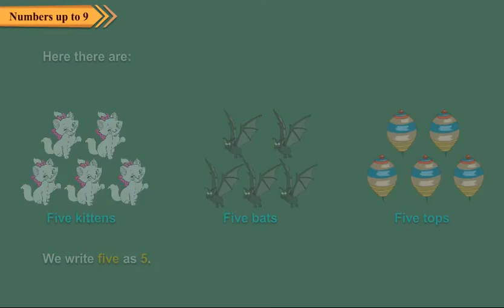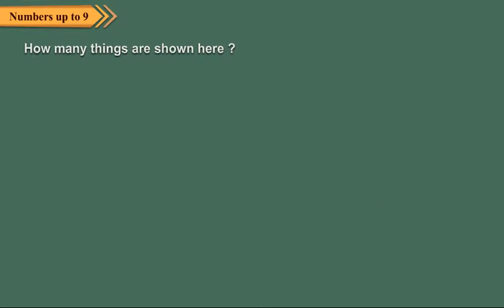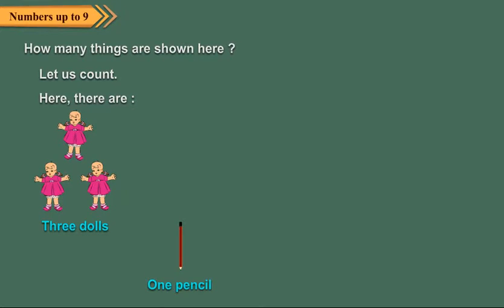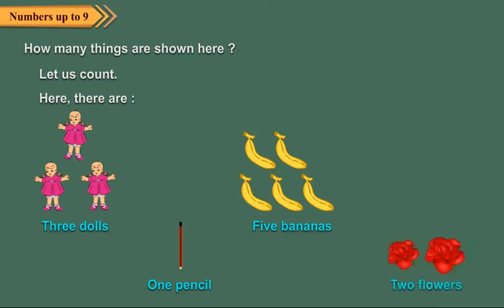Now, can you tell how many things are shown here? Let us count. Here, there are three dolls, one pencil, five bananas and two flowers. Again, observe these objects and count them.